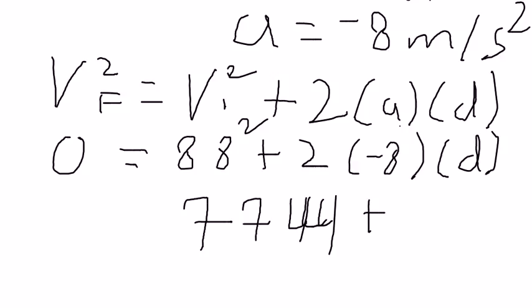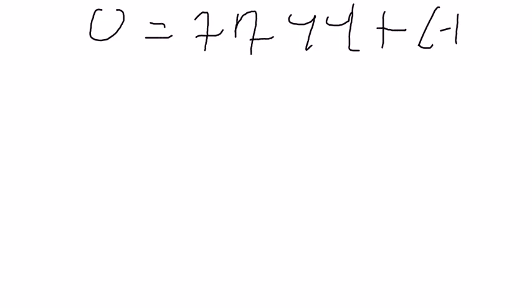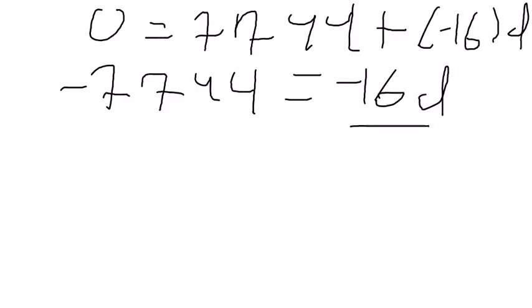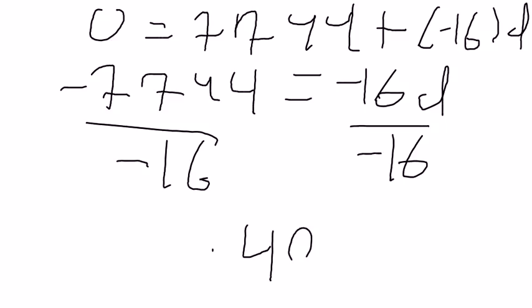plus negative 16 times d equals zero. So zero equals 7,744 plus negative 16 times d. Using simple algebra, negative 7,744 equals negative 16d. Divide negative 16 on both sides, and we get 484 meters.